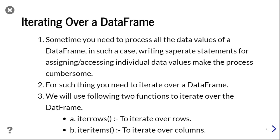There are two functions. We have learned some functions in our previous session — the link is in the description and above the video. There are two functions: iterrows and iteritems to iterate over rows and columns respectively. iterrows iterates over the rows of a data frame and iteritems iterates over the columns.